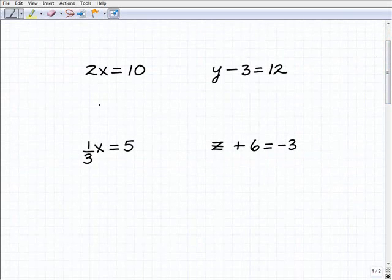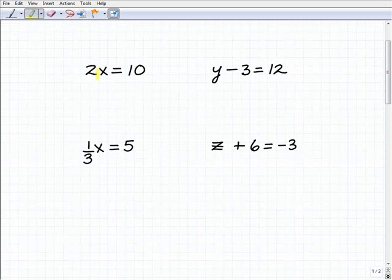This 2x equals 10, this is 2 times x equals 10, and the objective when you're solving an equation is to get x equals whatever that number is going to be, and that's the solution. So the way we do a problem like this, because we have 2 times x, what we want to do is divide both sides of the equation by 2, because 2 divided by 2 is 1, or we can just write it this way, 1x or simply x.